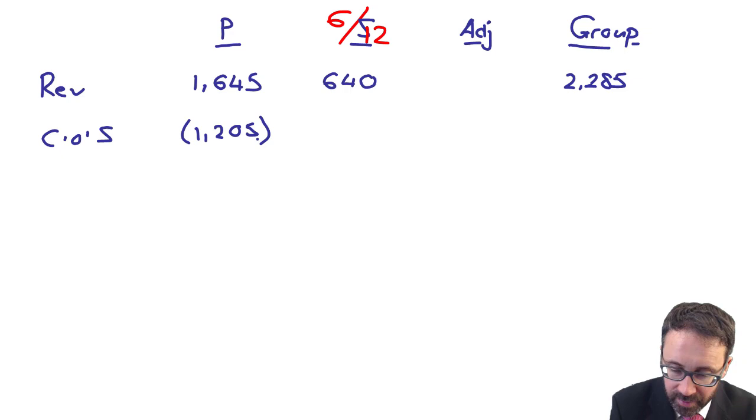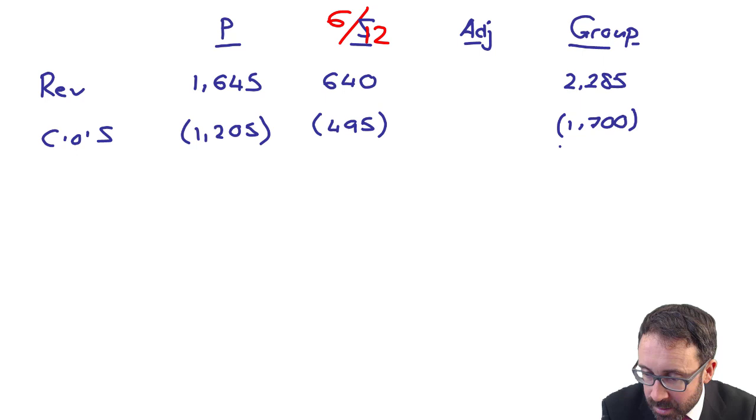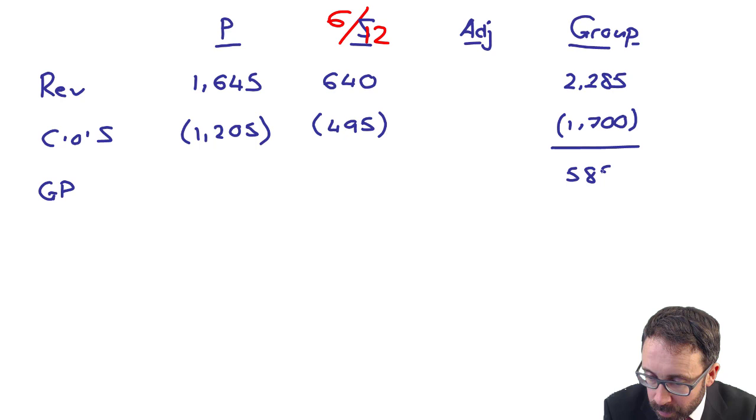Cost of sales of the parent is 1.205. Again, if I go back to the subsidiary, it's 990. I need to prorate that by six-twelfths. Does that give me 495? So when I add across and I consolidate on a line-by-line basis, does that give me 1.700? My gross profit, therefore, is then 585.